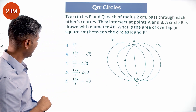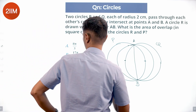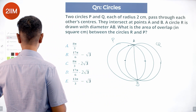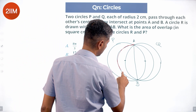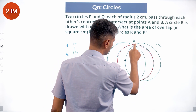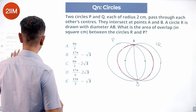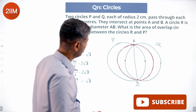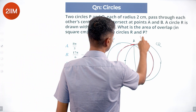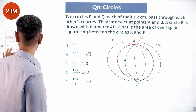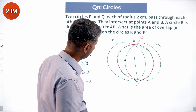What is the area of overlap between circles R and P? This is circle R — let me put it in a different color. We want to find the area overlapping between circles R and P.